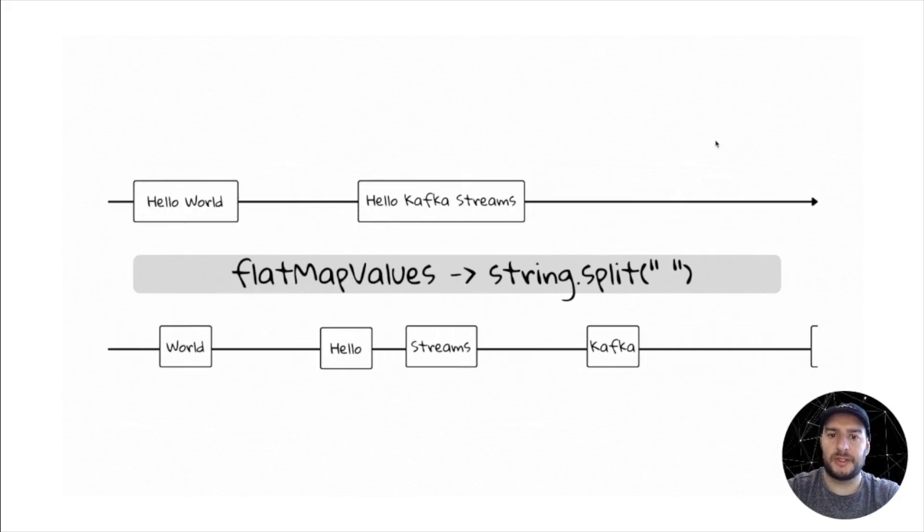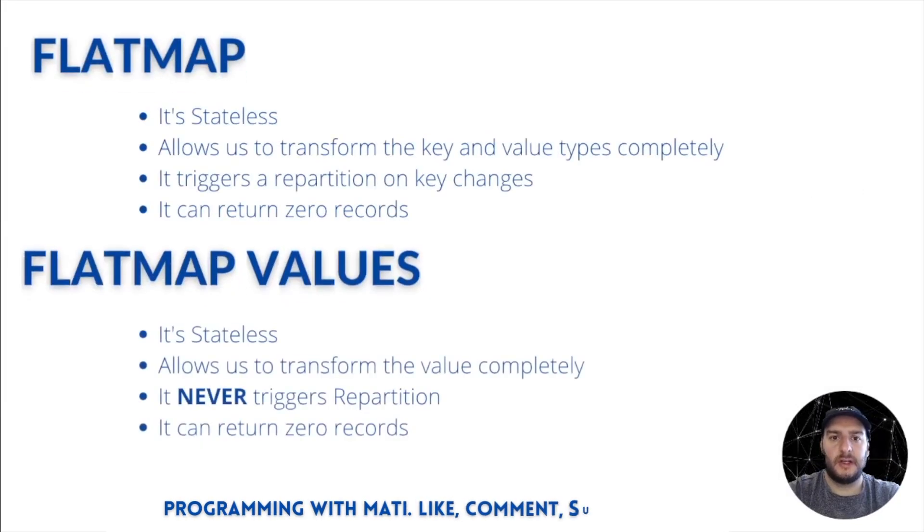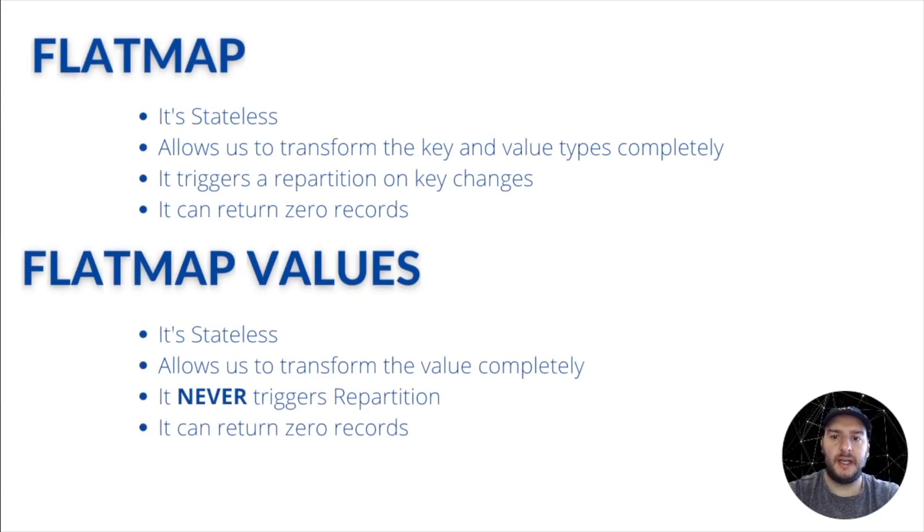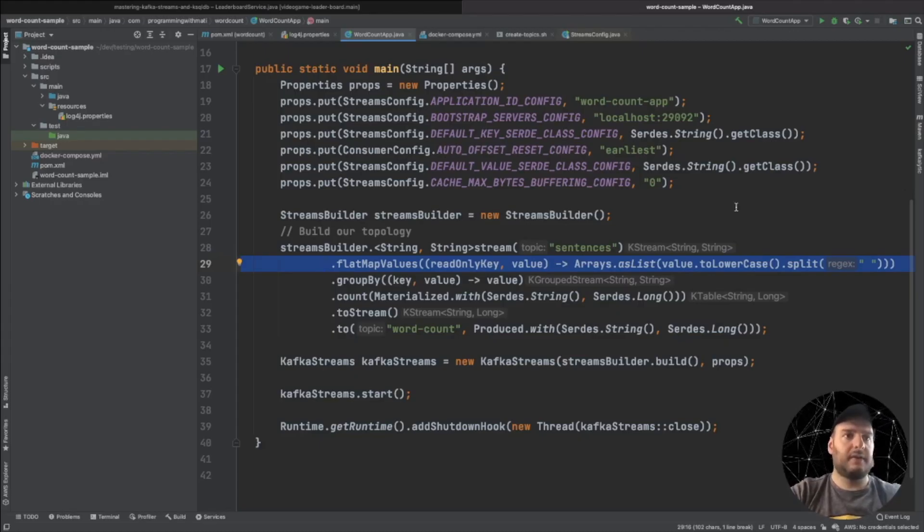We use the string split function to do this. Flat map is a stateless operation. It allows us to transform the key and the values completely. It triggers a repartition on key changes, and it can even return zero records. Flat map values is also stateless, but it will only allow you to transform the value. It never triggers a repartition because of this, and it can also return zero records.